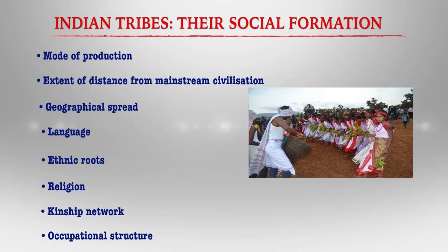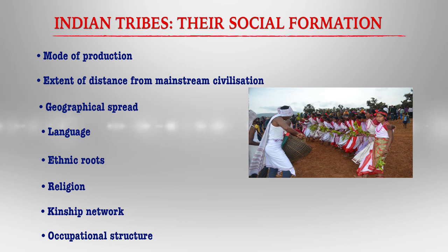There can be many parameters for classifying tribes and distinguishing one from another. The administrative-constitutional classification is based on the criteria of educational attainment and economic and social status of different social groups. Likewise, anthropologists classify on the basis of mode of production, extent of distance from mainstream civilization, geographical spread, distinct language, exclusive ethnic-cultural roots, religion, kinship network, and occupational structure. It is on the basis of either of these criteria that a tribe can be distinguished from another.